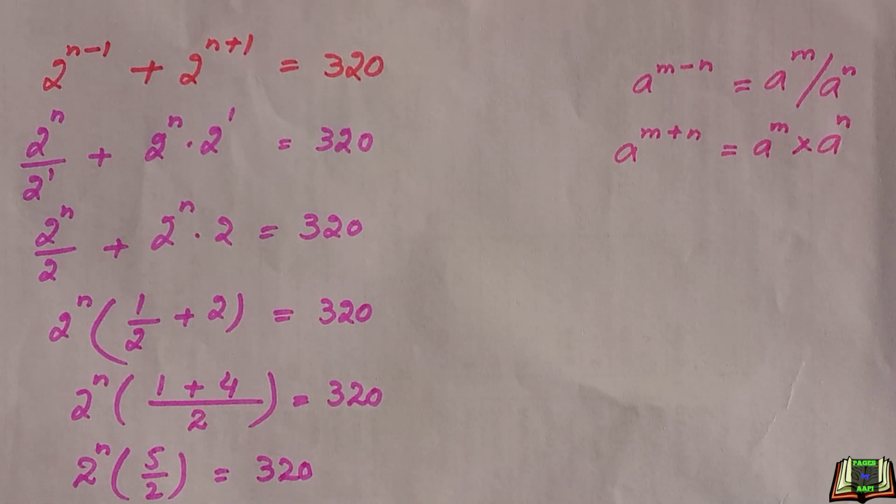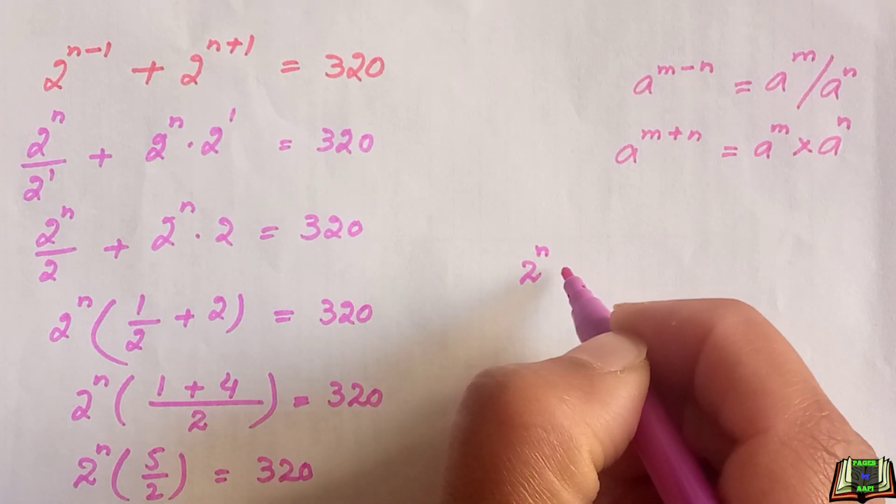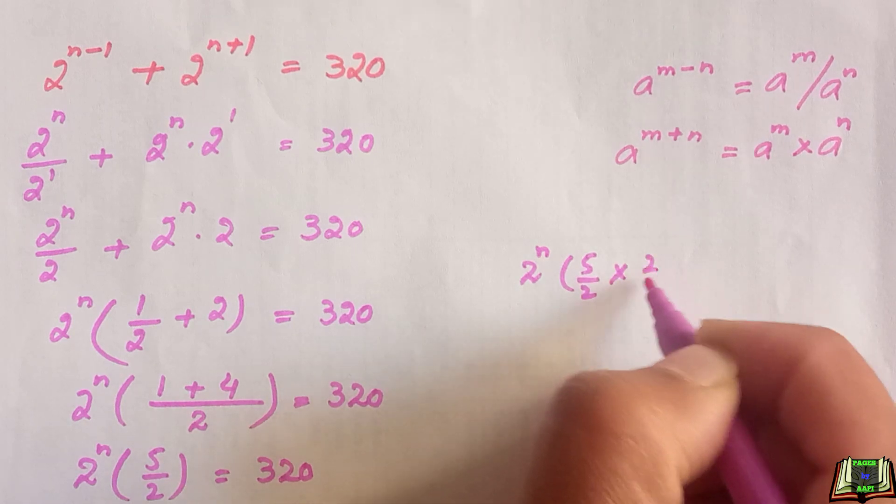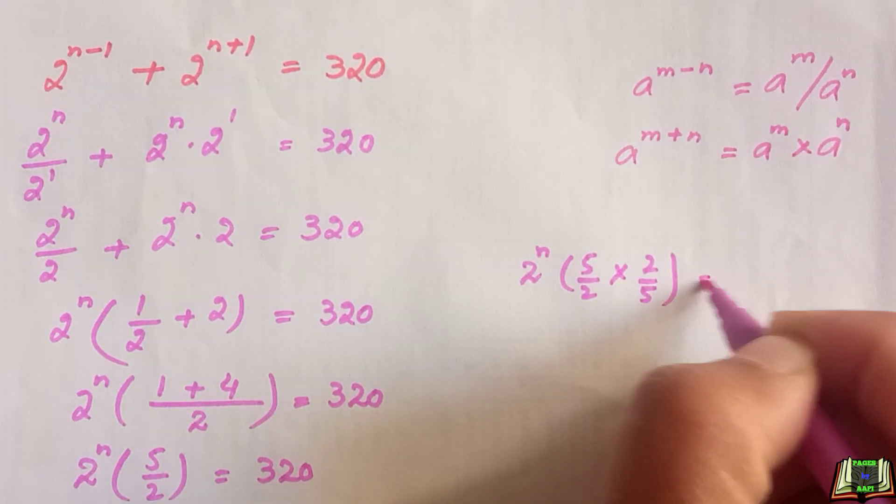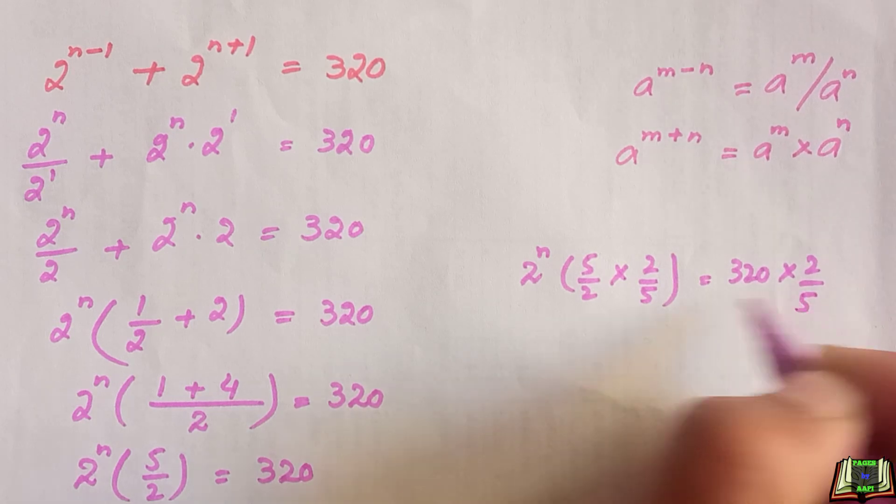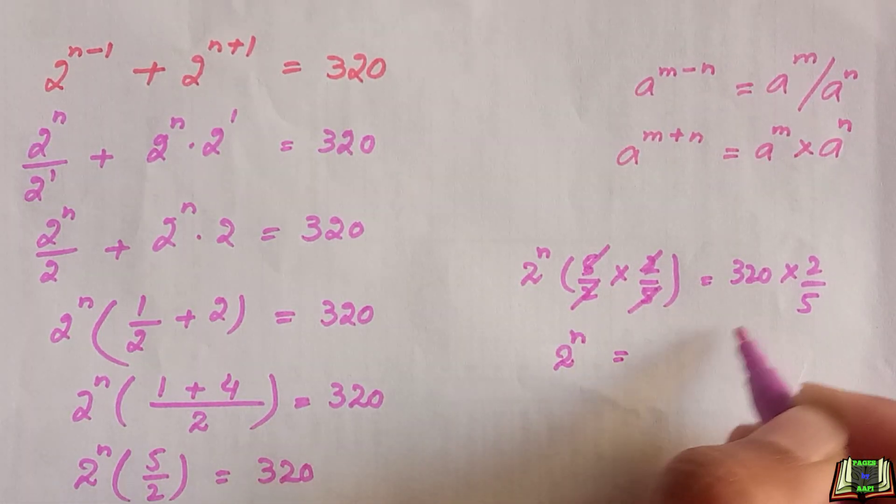In the next step, we are going to multiply by 2 divided by 5 on both sides of the equation. So 2 raised to power n times 5 divided by 2 times 2 divided by 5 on the left, and on the right hand side 320 times 2 divided by 5. These cancel out.